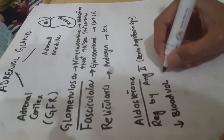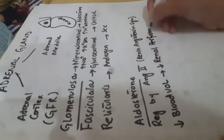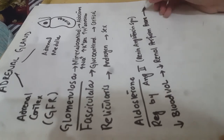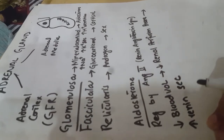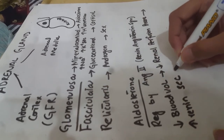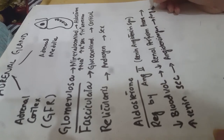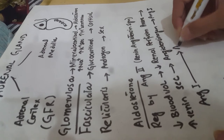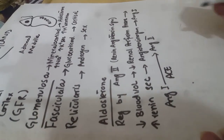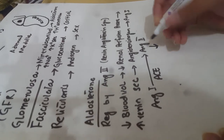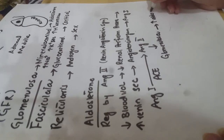Whenever there is decreased blood volume, there is decreased renal perfusion pressure, which leads to increased renin secretion. Renin then converts angiotensinogen to angiotensin 1. Angiotensin 1 is converted to angiotensin 2 by angiotensin converting enzyme (ACE). Angiotensin 2 then acts on zona glomerulosa and leads to increased aldosterone secretion.